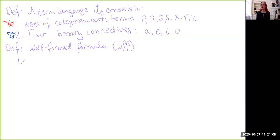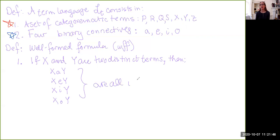On the first hand, we have that if x and y are two distinct terms, so they can't be the same term. And again, as I said, when I'm talking about terms, it's always with the assumption that these are categoromatic terms. So if x and y are two distinct terms, then you connect them with the A, you connect them with the E, you connect them with the I, you connect them with the O. All of these are WFFs.